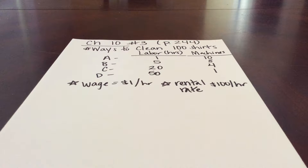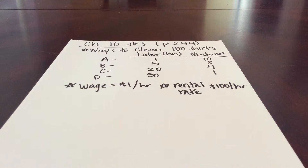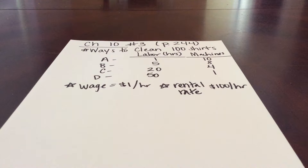I'm just going to work one part of this problem and then you can follow up and hopefully do the other calculations on your own. We're given a chart in problem number 3 with 4 different ways that we could clean 100 shirts. We could use a combination of labor, paying an hourly wage, or we could use some capital — some actual machines. You can see option A listed there.